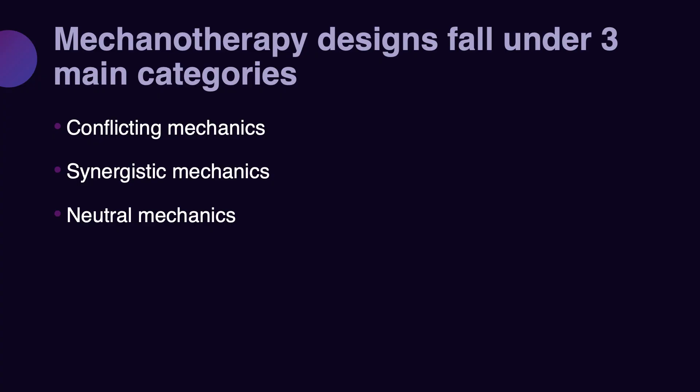As a first session on sequencing, we need to clarify the most important factors, and that is the definition of three types of mechanics: conflicting mechanics, synergistic mechanics, and neutral mechanics. This concept — conflicting, synergistic, and neutral — should be evaluated under two general headlines.